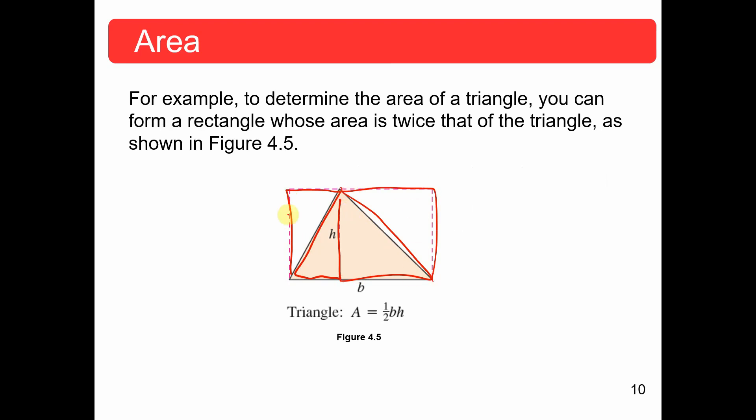So we can see that we have our base times height because we're adding these parts. So we have total base times the total height, but the triangle is only half of that. This is where the formula or the definition of the area of a triangle comes from.